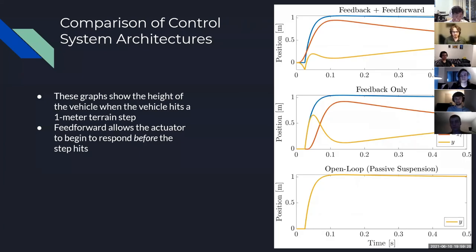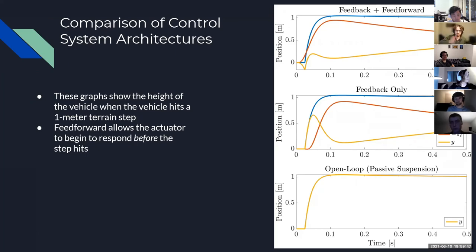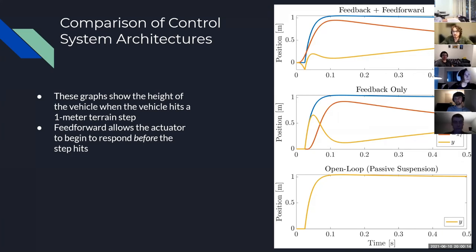This is a comparison of control architectures showing that the feedback and feedforward design gives us the best dynamic response. The step response on the top plot shows the orange actuator trace starting to respond before the step hits the system — that's the whole point of feedforward. The yellow position trace y is perturbed significantly less than in the feedback-only case, where the system only responds after the disturbance has hit, and both perform significantly better than the open-loop passive system.